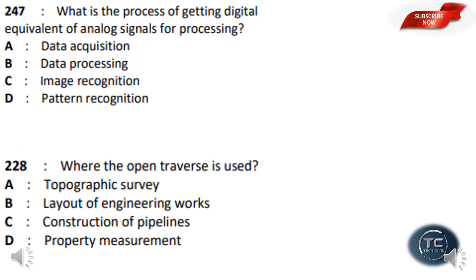What is the process of getting the digital equivalent of analog signals for processing? The options are: data acquisition, data processing, image recognition, pattern recognition. The answer is data acquisition, which is the term used for obtaining the digital equivalent of analog signals for processing.